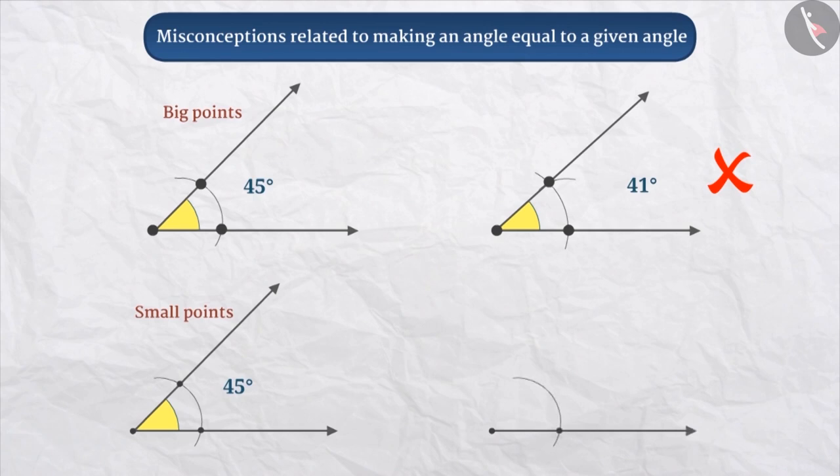Keep in mind that the smaller the point, the more precisely the pointed end of the compass can be positioned. Then, the probability of making a mistake is reduced when making the angle. So, whenever you draw a point, make it small.